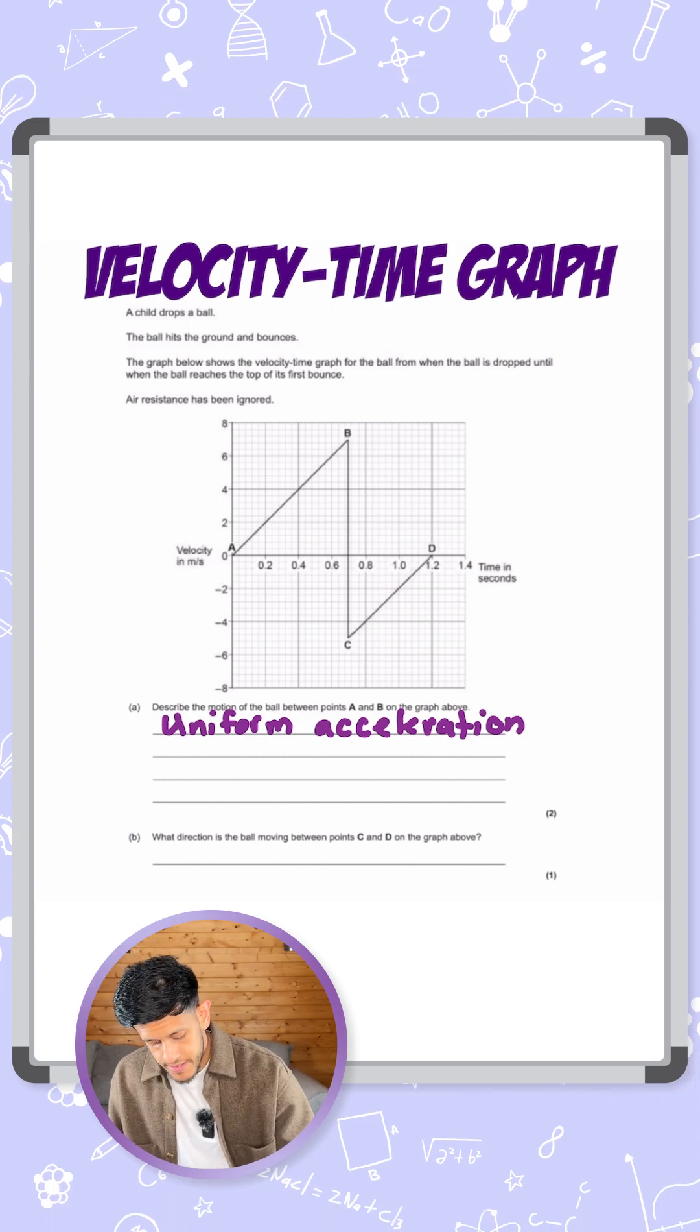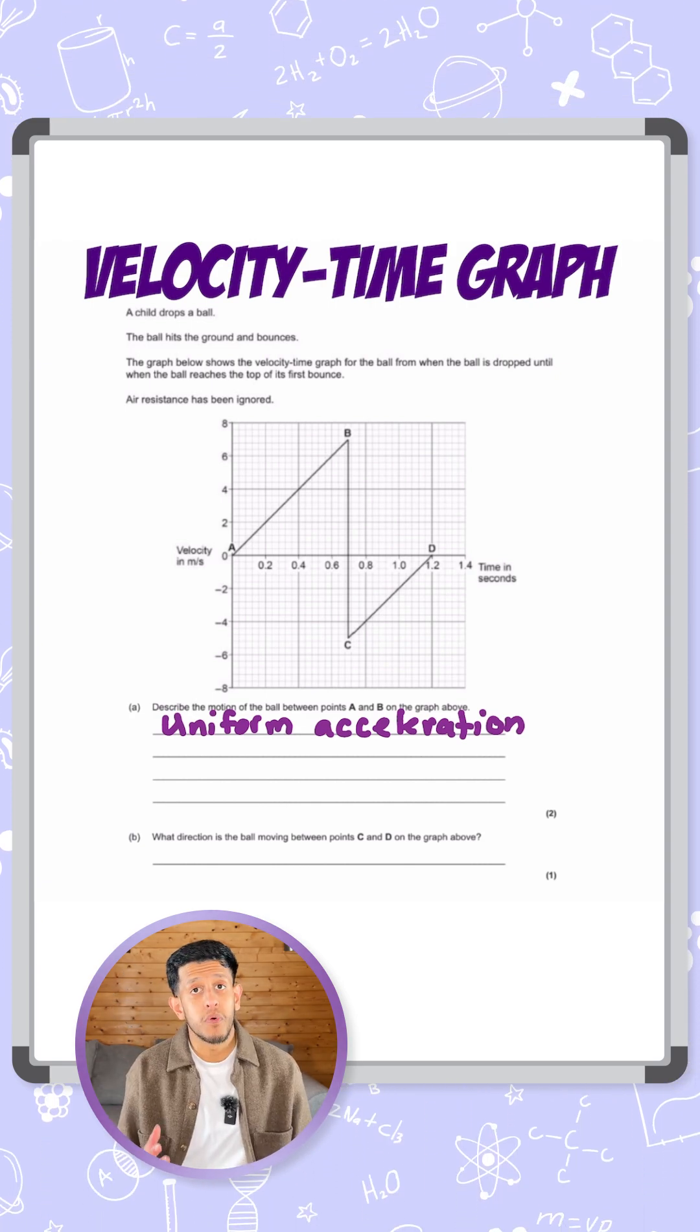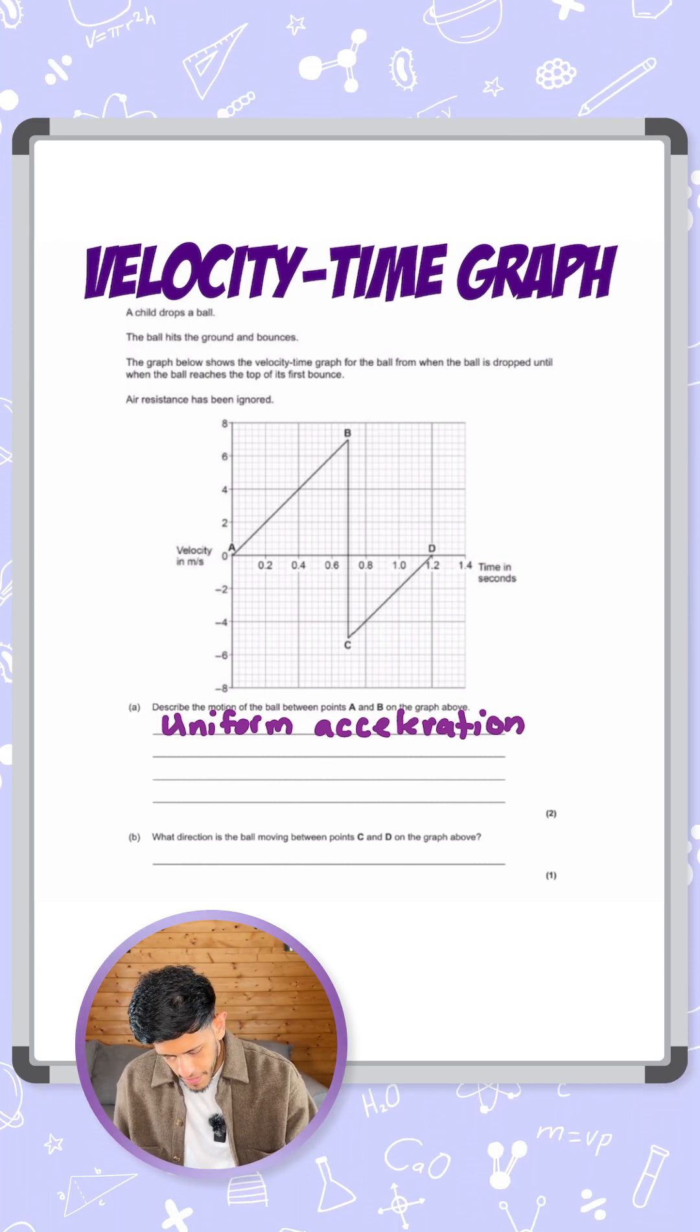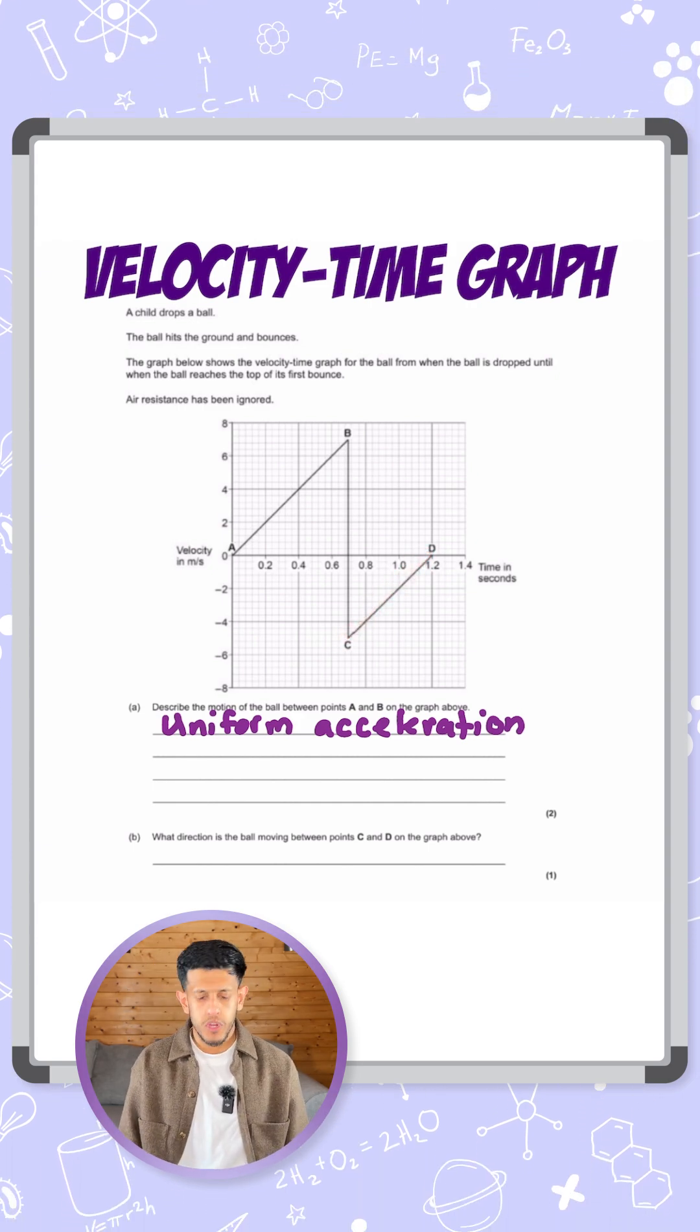And the second question says, what direction is the ball moving between the points C and D on the graph above? So you can see here C and D is what it's referring to, that point of the motion.